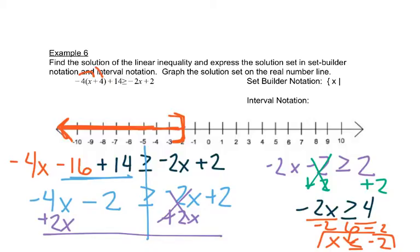So our set builder notation is we just copy that. X is less than or equal to negative 2, and close the curly brace.